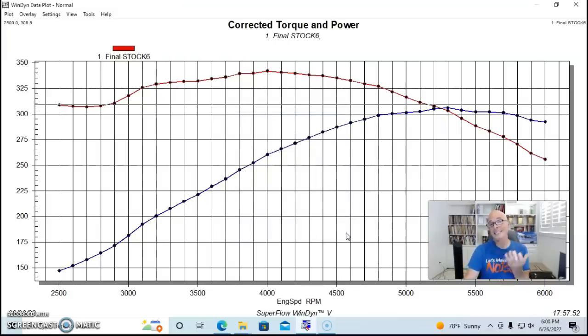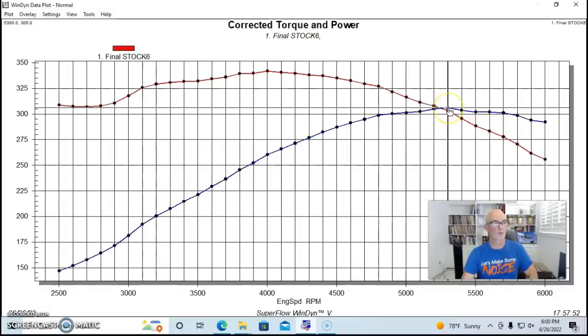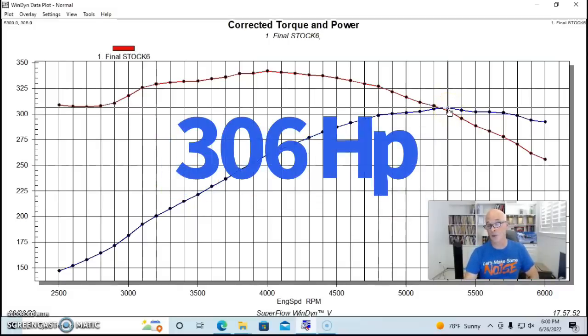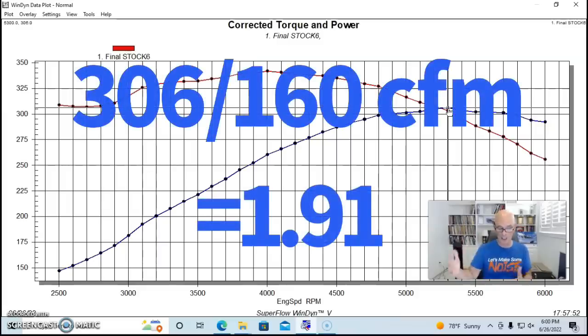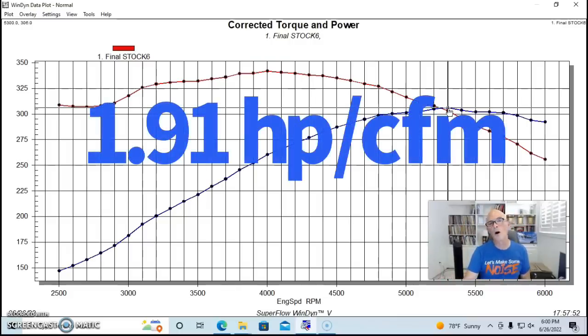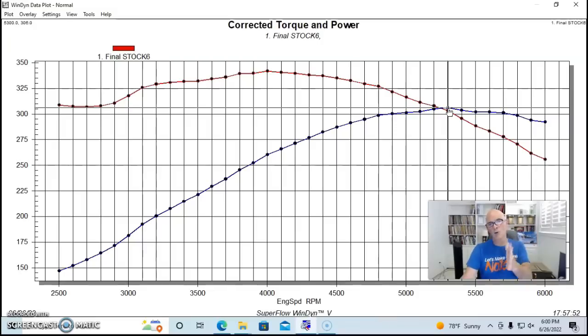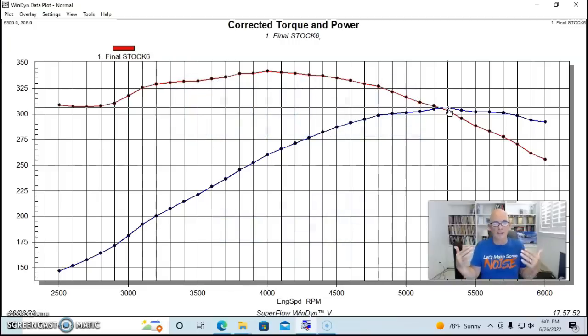So run with our stock E7TE head, remember flowing 160 CFM, our combination produced right at 306 horsepower, so right at one horsepower per cubic inch basically with the stock head. And then if we take the math a little bit further and see that 306 horsepower with 160 CFM, that means that each CFM is providing 1.91 horsepower.